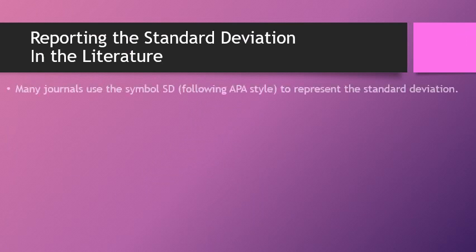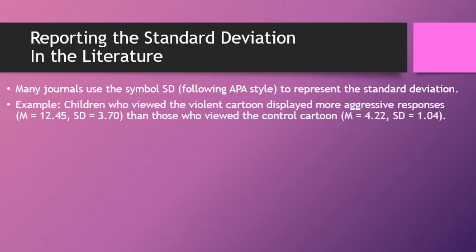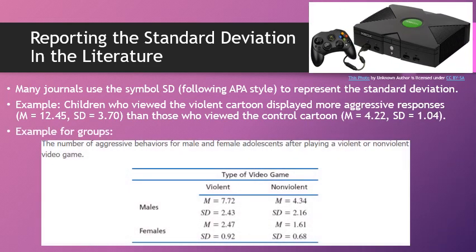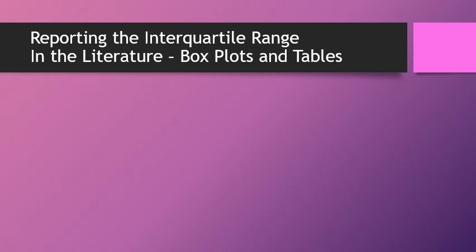How would you report this in the literature? Many journals use the symbol SD to represent standard deviation. For example: 'Children who viewed the violent cartoon displayed more aggressive responses (M = 12.45, SD = 3.70) than those who viewed the control cartoon (M = 4.22, SD = 1.04).' If you have groups, you might show the means and standard deviations in a table format.